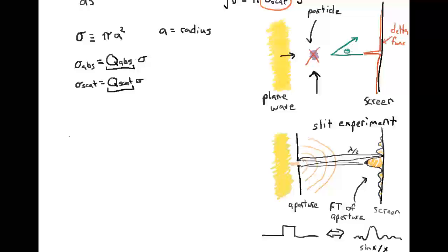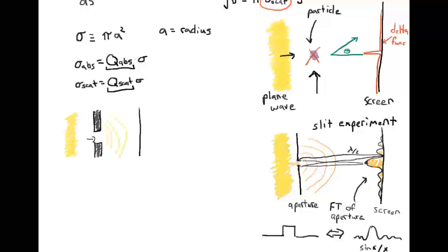Before we consider what happens when we put the particle back, let's consider the opposite of a particle: a barrier that blocks all the light except for the light that would have passed through the area where the particle existed. The opposite of a particle is just our slit experiment — a diffraction aperture — and we end up with our sinc function on the screen.